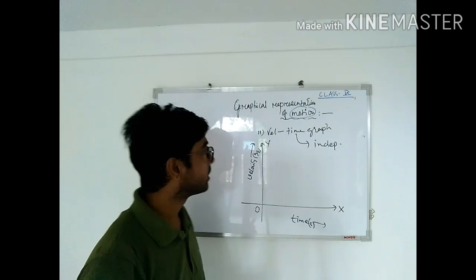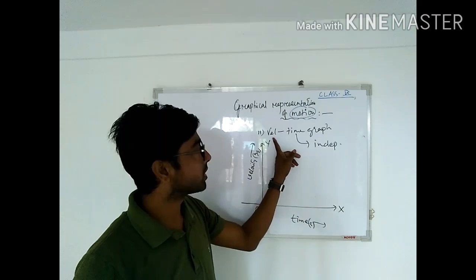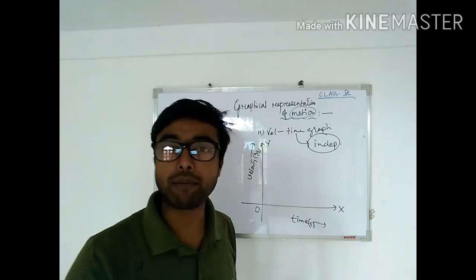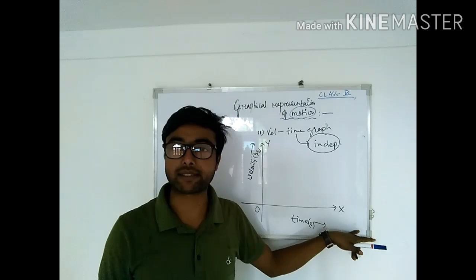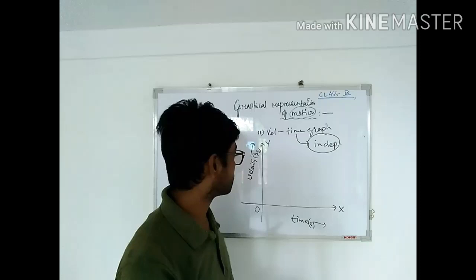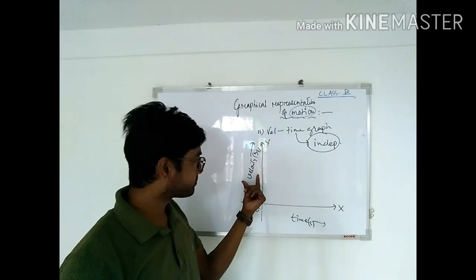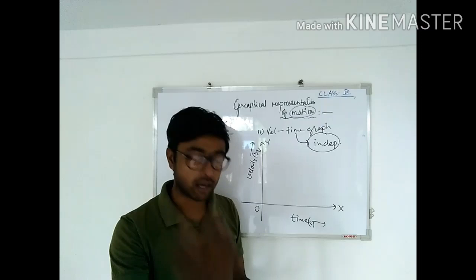Let's understand what is a velocity-time graph. In a velocity-time graph, like the distance-time graph, there are two variables: velocity and time. Time is always the independent variable, so it is placed along the x-axis. The dependent variable, velocity, depends on time, so velocity is placed along the y-axis.